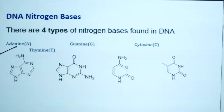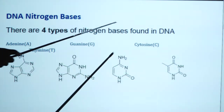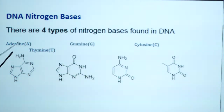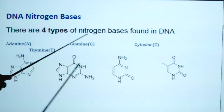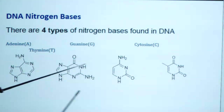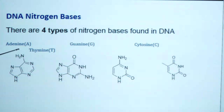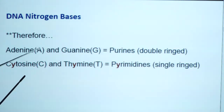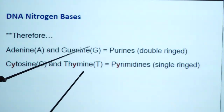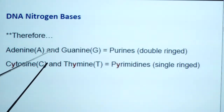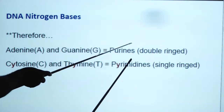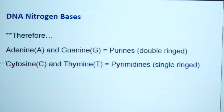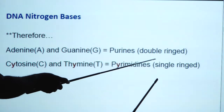There are four types of nitrogenous bases found in deoxyribonucleic acid: adenine, guanine, cytosine, and thymine. Adenine and guanine are collectively known as purines, which have a double ring structure. Cytosine and thymine are collectively known as pyrimidines, which have a single ring structure.